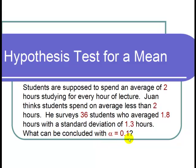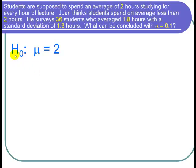So let's first state our null hypothesis. The null hypothesis is that the average or the population mean is 2 hours because that's what Juan is trying to prove is incorrect. So in symbols H naught is that mu is equal to 2. Juan thinks the average is less than 2 hours. So H1 is that mu is less than 2.